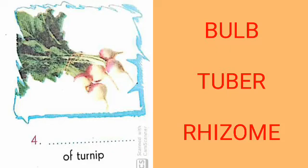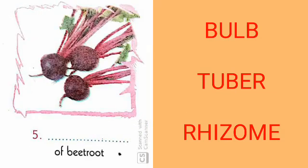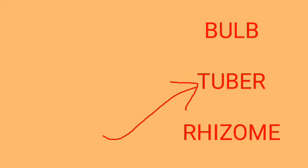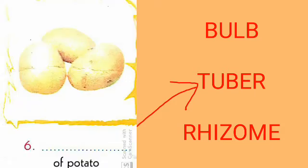This is turnip. Turnip stem is called tuber. Now come to the beetroot — chukandar. Its shape is just like turnip, but the color is different. Beetroot stem is also called tuber. Now come to the potato, king of vegetables — potato stem is called tuber.